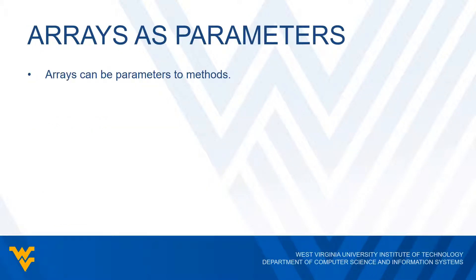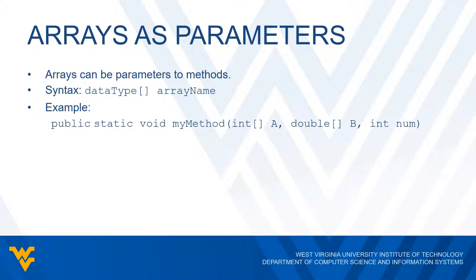Arrays can be parameters to our methods, and the syntax is not any different than what we'd expect: we have our data type, some square brackets, and then the array name — just like any other parameter variable, except we have the square brackets. For example, I could have public static void myMethod with two array parameters a and b — an array of integers and an array of doubles — plus some other integer parameter. Then I can use a and b as arrays of integers and doubles, respectively.